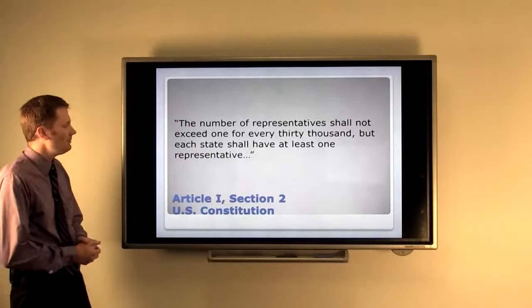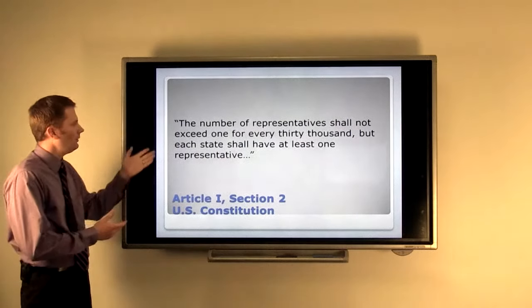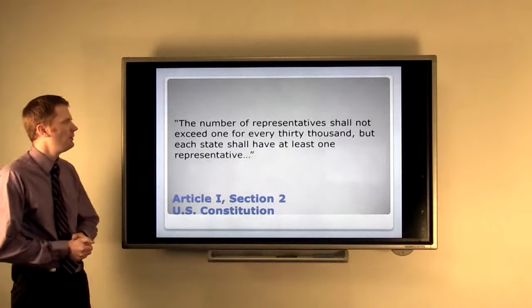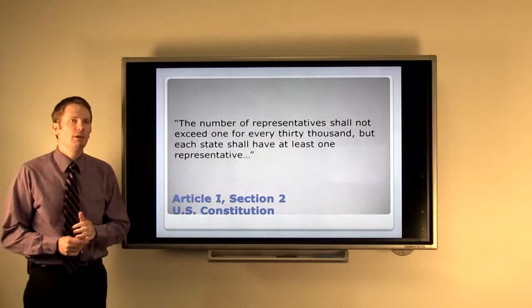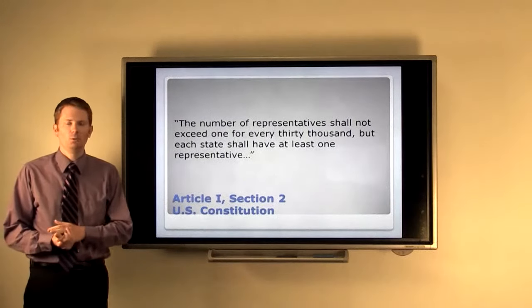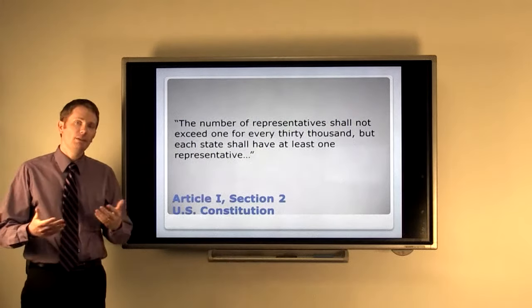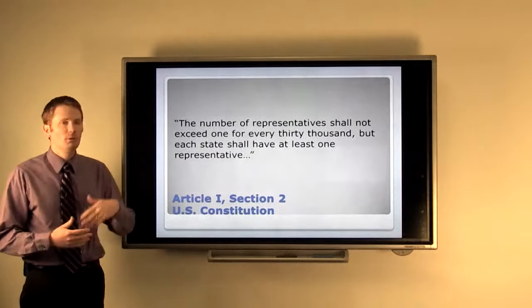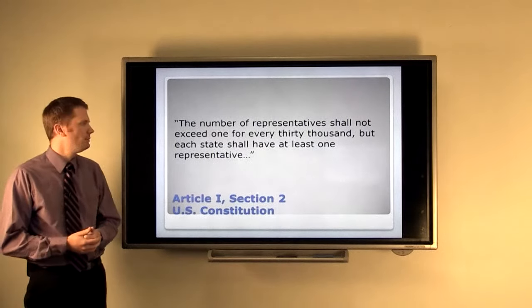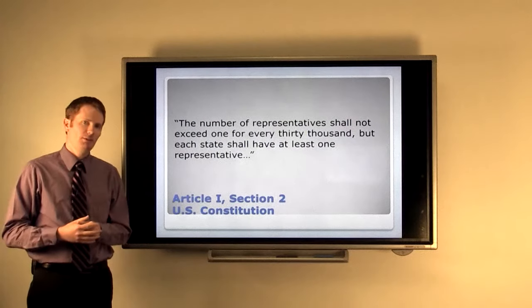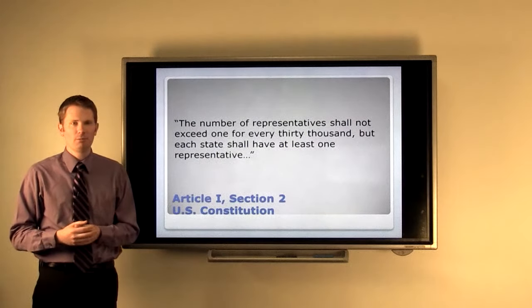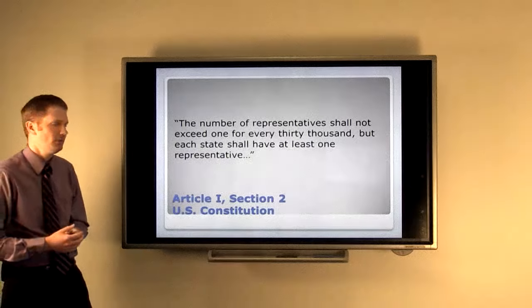Later on in the same section of the Constitution, we also get this statement: that the number of representatives shall not exceed one for every 30,000, but each state shall have at least one representative. So basically, you needed 30,000 people to get a representative in Congress, and you should always have at least one. So even the most least populous states deserve at least one representative in the U.S. House of Representatives.